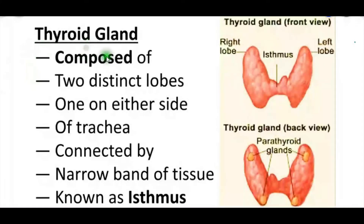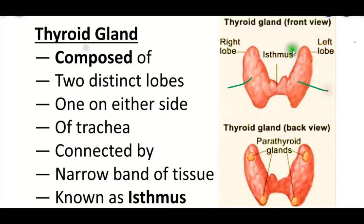Thyroid gland is located in our neck region. It is composed of two distinct lobes — look at this picture, this is the first lobe and this is the second lobe. This is a front view of the thyroid gland. It is composed of two distinct lobes lying one on either side of the trachea.